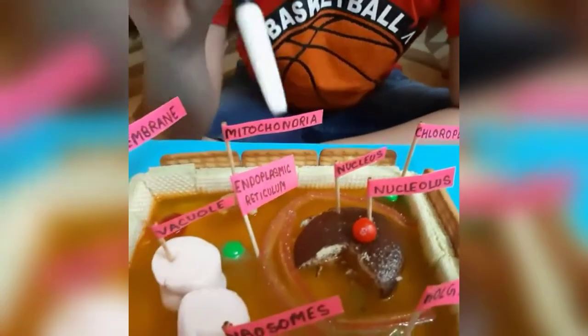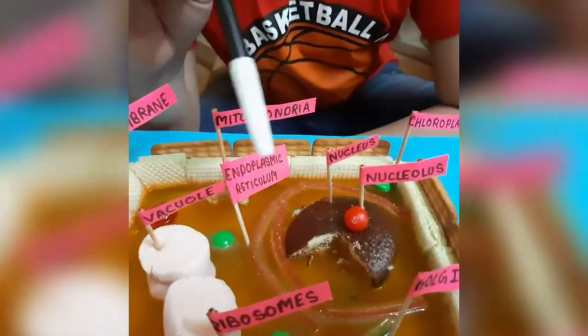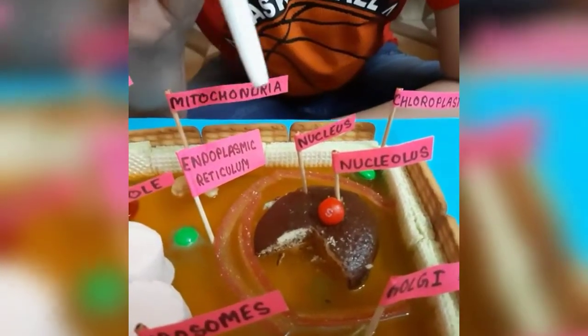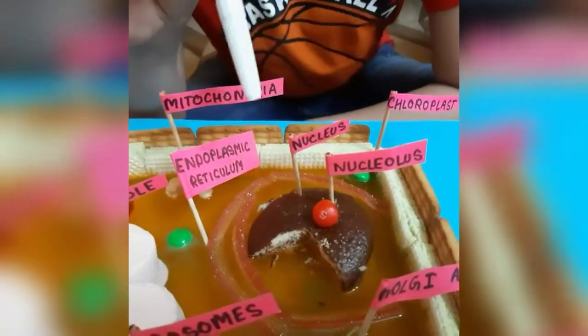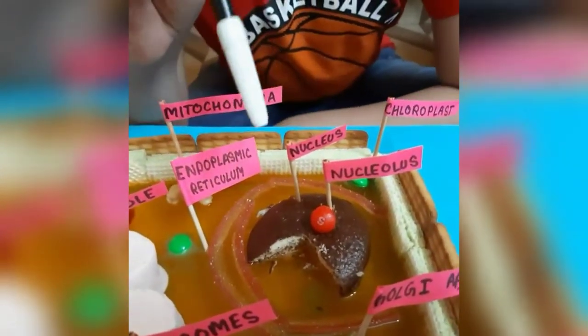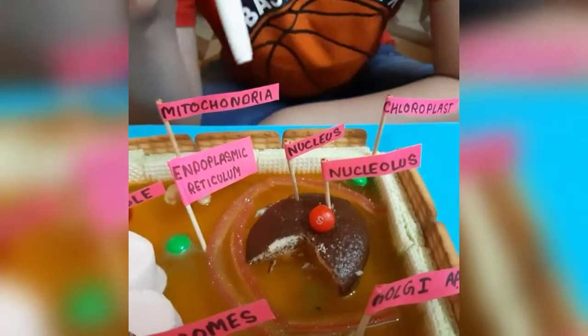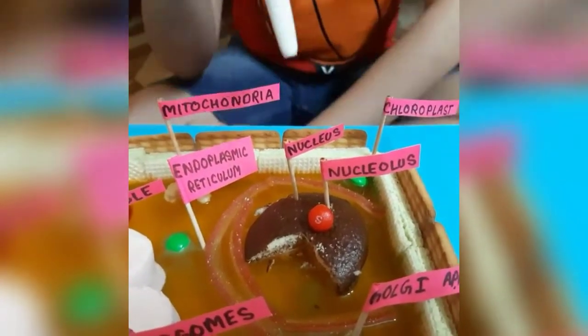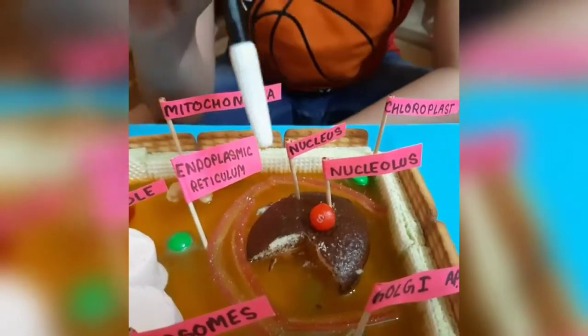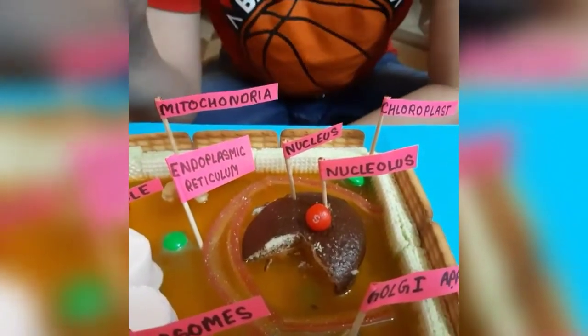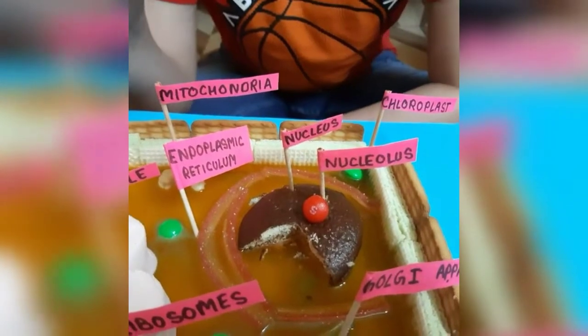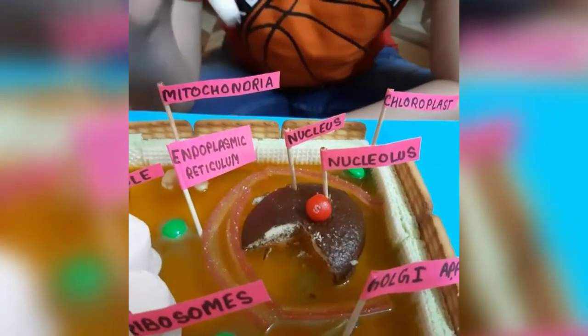Almost in the center of the cytoplasm, there is the nucleus, which is represented by a Choco Pie. The nucleus is also known as the control center of the plant cell.